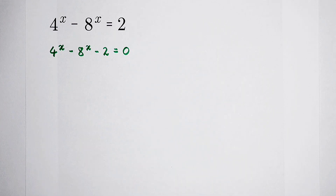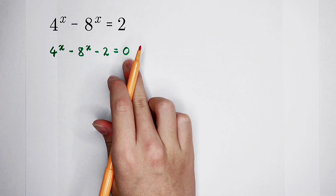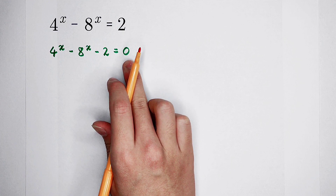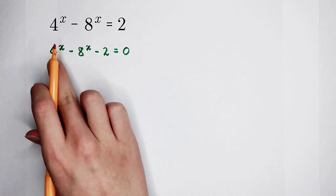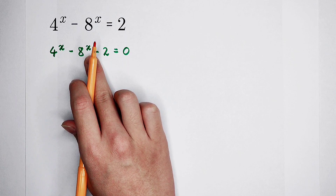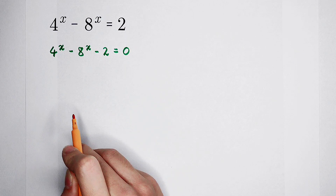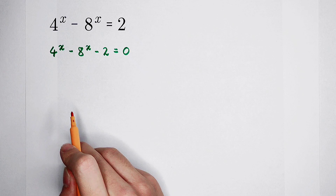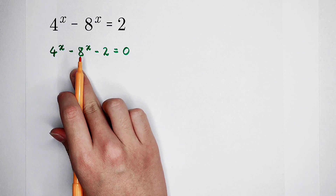How nice it is. And then, observe this equation. Since this is an exponential equation, x appears as an exponent. So we have to find out the relationships between its bases.